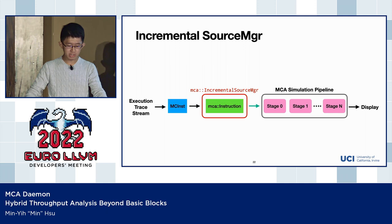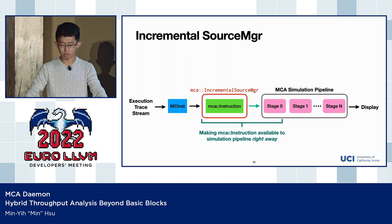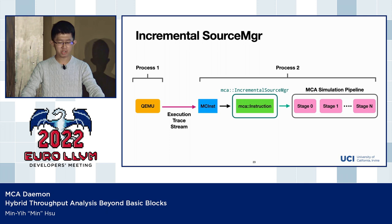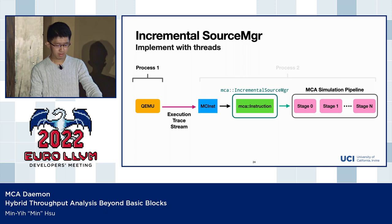To solve this issue, we replaced the original source manager with a new version called the incremental source manager, which makes MCA instructions available to the simulation pipeline right away. This immediately gives us the opportunity to put QEMU and the MCA parts in two processes or threads running in parallel, because now we can stream MCA instructions to the simulation pipeline once their execution trace is available, rather than waiting for all traces to arrive.